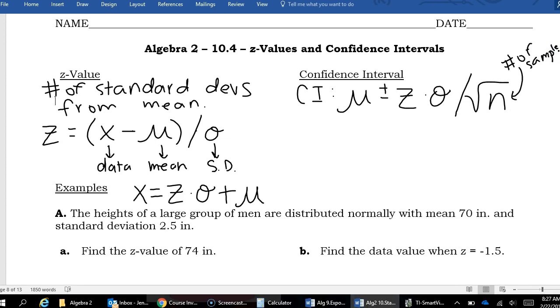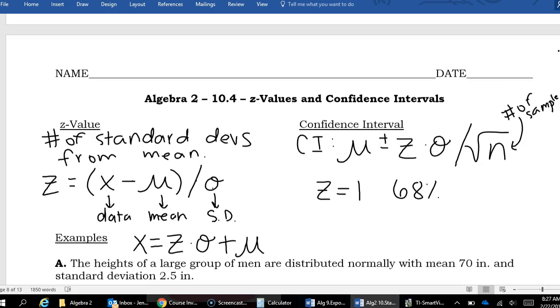So I'm not going to rewrite it, but we got mean right here, we got standard deviation right here. Now your Z score is going to vary. If you are trying to get a 68% confidence interval, that corresponds to a Z value of 1.